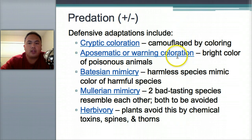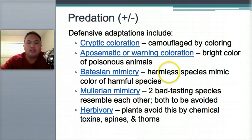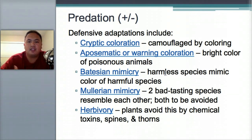Aposematic or warning coloration is the bright color of poisonous animals — spiders with red dots or other bright colors signaling danger. Batesian mimicry means a harmless species mimics the color of a harmful species. There are species that aren't dangerous but copy the bright colors or patterns of a snake. That's Batesian mimicry.